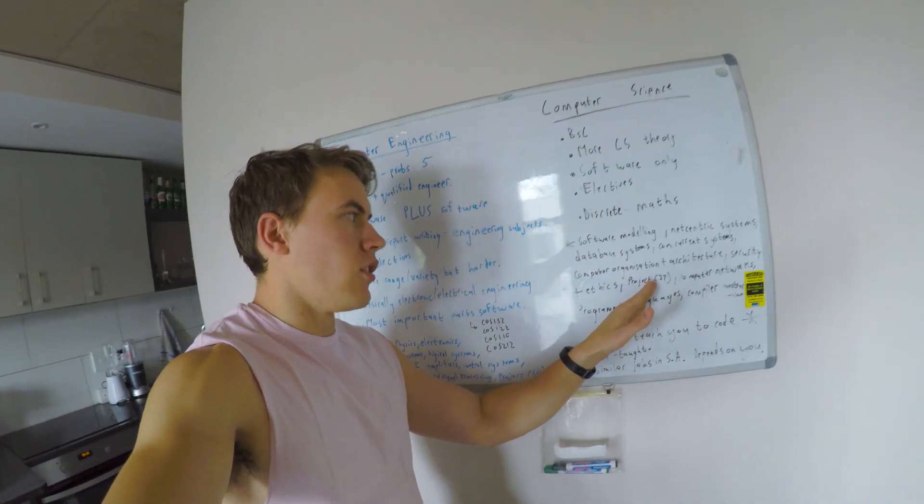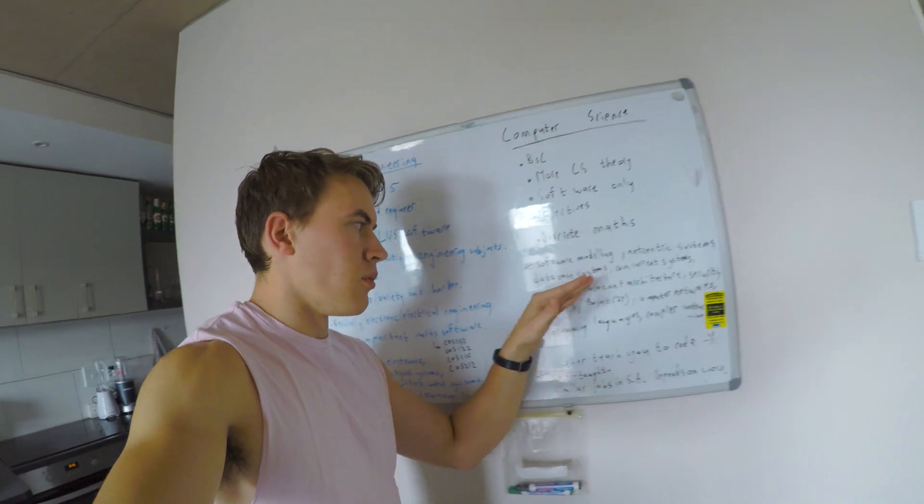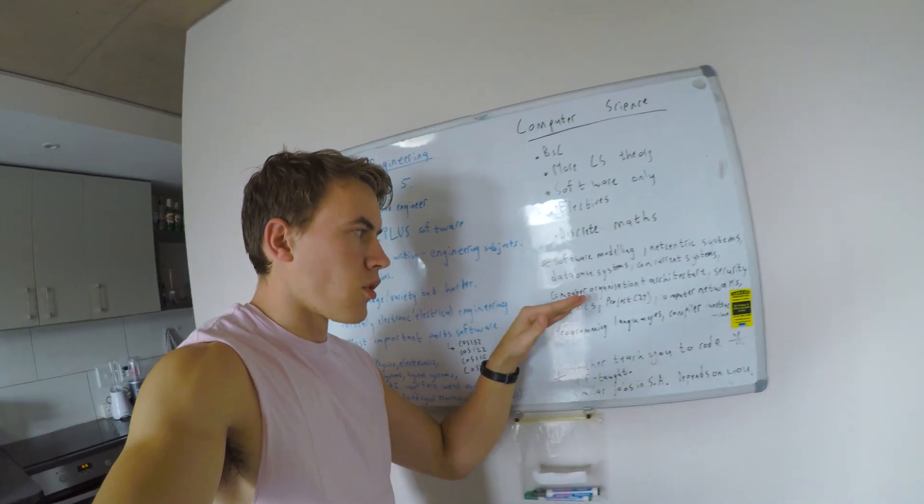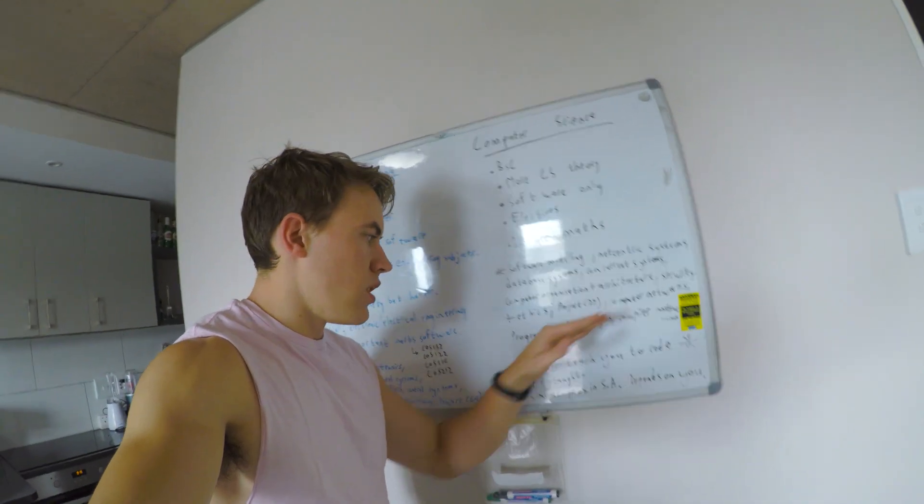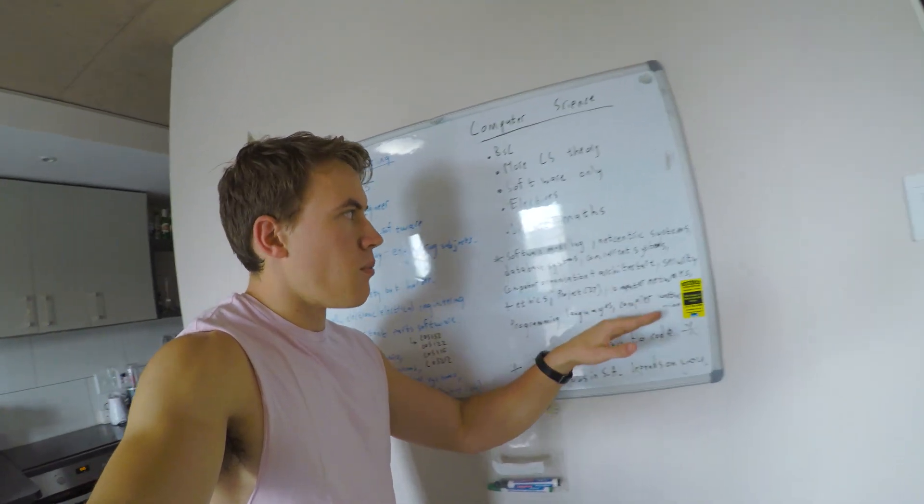Computer science, you're going to be doing things like software modeling, net-centric systems, database systems, concurrent systems, computer organization and architecture, security and ethics, computer networks, programming languages, compiler construction.